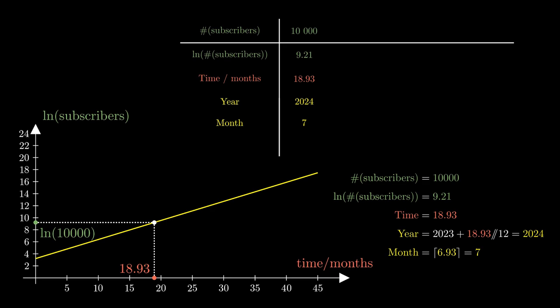But the decimal part would tell us how much of the month has passed. So we're going to extract the decimal portion, 0.93, and ask how much of the month has passed.